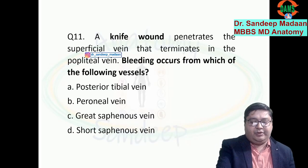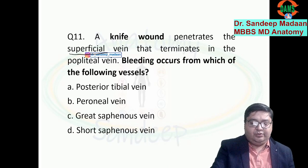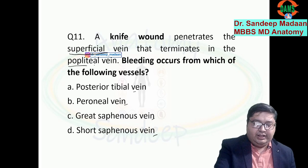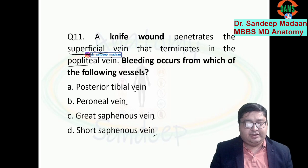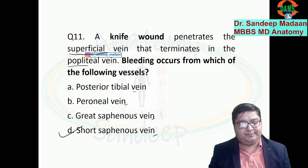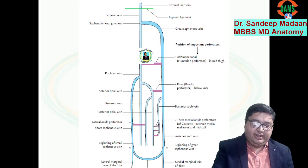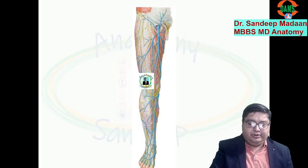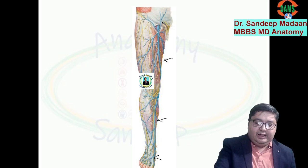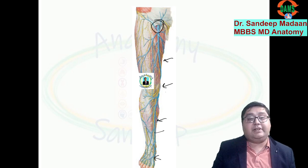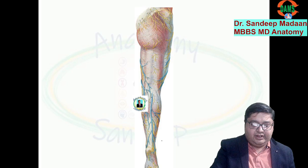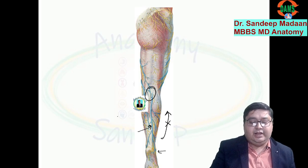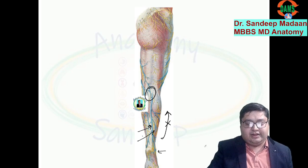Next question: a knife wound penetrates the superficial vein in the popliteal fossa. Among the options, only two are superficial veins; peroneal and posterior tibial are deep veins. Bleeding occurs from the vessel that terminates into the popliteal vein. Great saphenous terminates into the femoral — that cannot be our answer. Short saphenous vein is the answer. Short saphenous begins laterally, runs in the posterior of the leg, and terminates in the popliteal fossa into the popliteal vein, accompanied by the sural nerve.